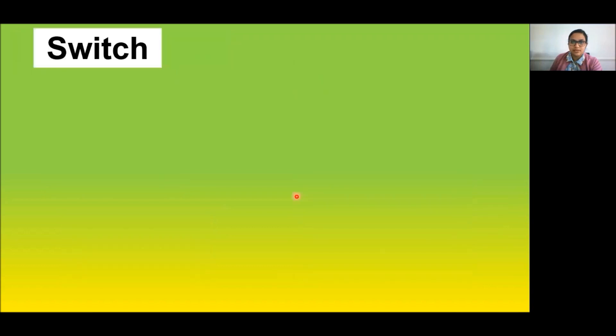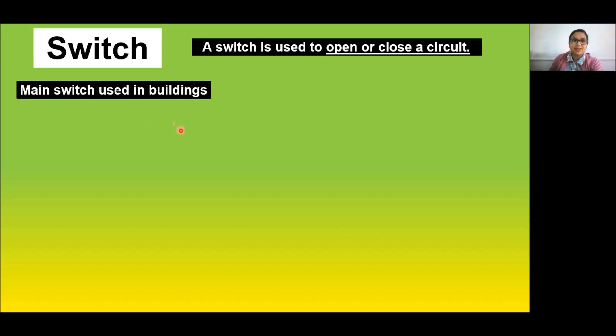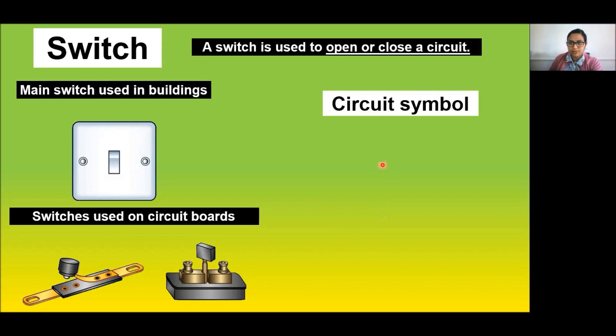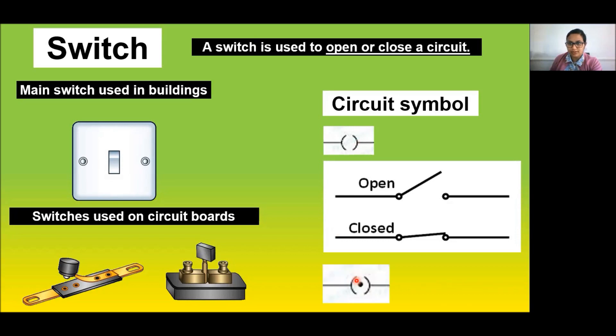Next is the switch. What does a switch do? A switch makes a connecting link between the cell and the bulb. These are the switches used in electric circuits. The circuit symbol for switch is given by this for open circuits and this for closed circuits. Another way of representing open circuit and closed circuit is like this.